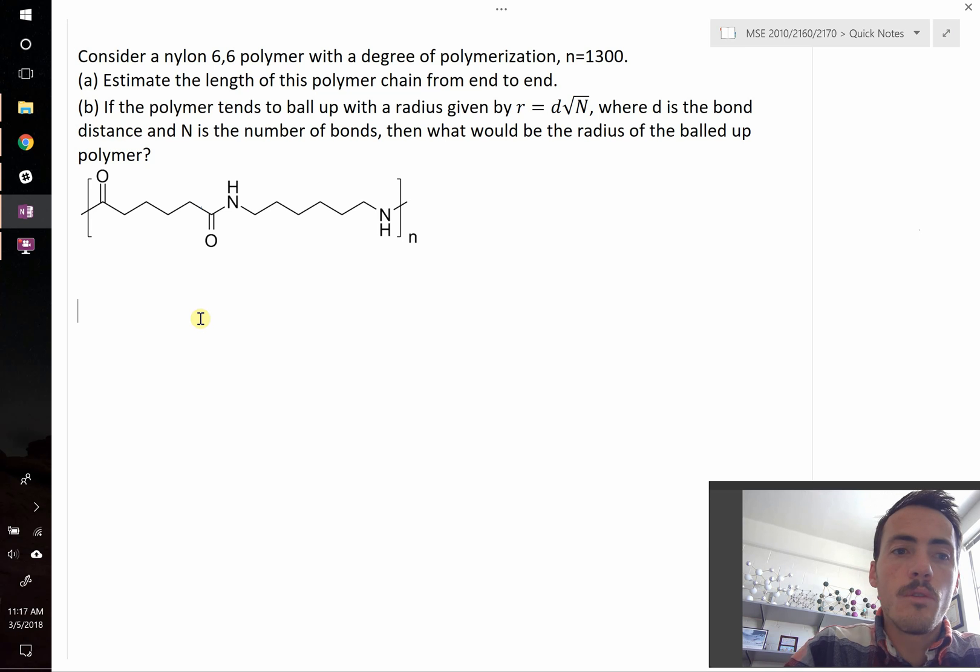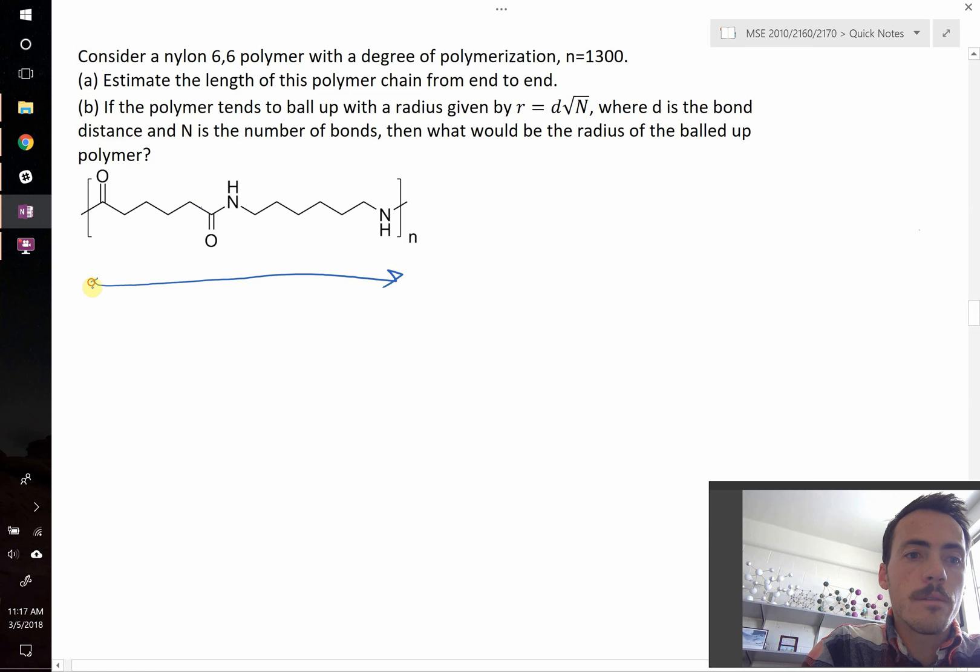Because the overall length of this mer unit, say right there, let's call that L, small L, that's going to be equal to the number of bonds times the distance of that bond multiplied by the sine of the angle between those bonds, it's called theta, over 2. Where does that come from?